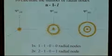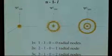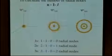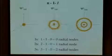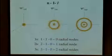And for the 3s, we start with 3, subtract 1, and again l equals zero, so minus zero — and we have two radial nodes.